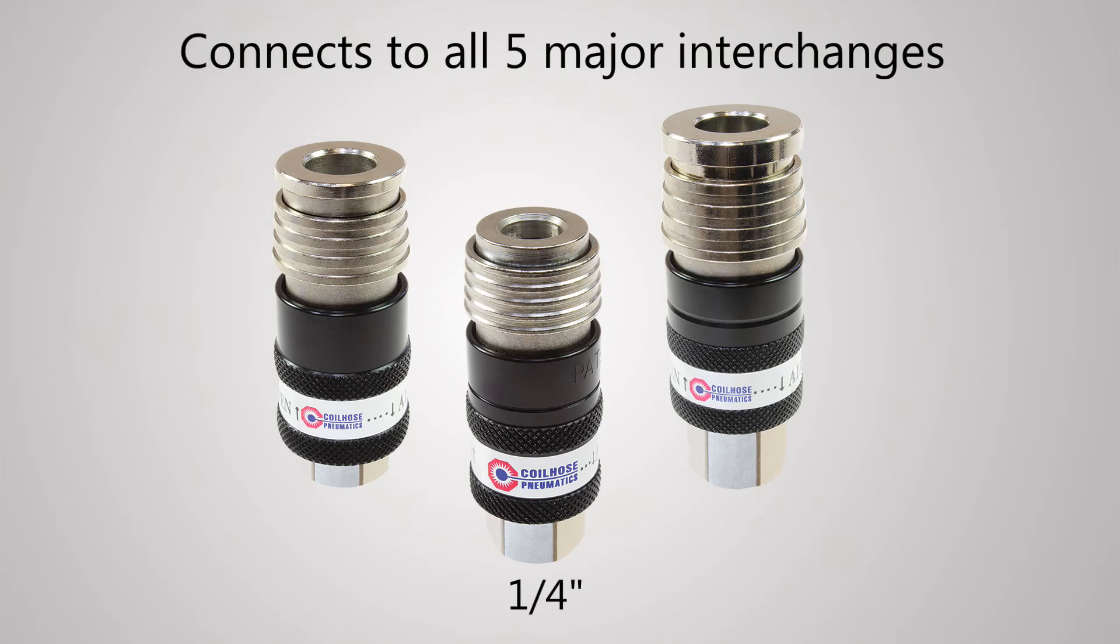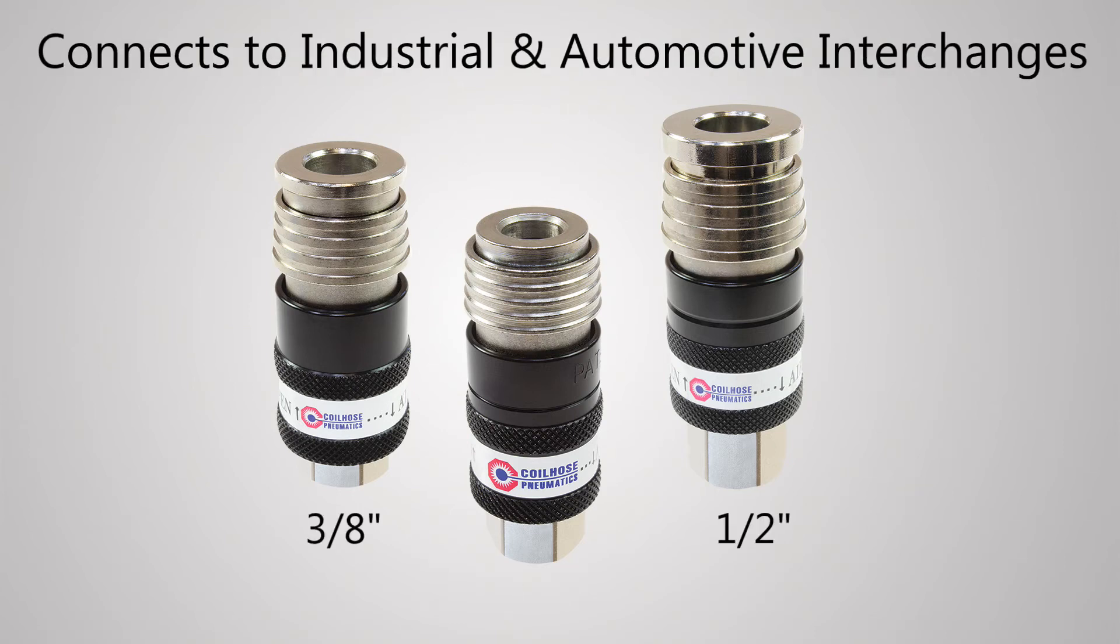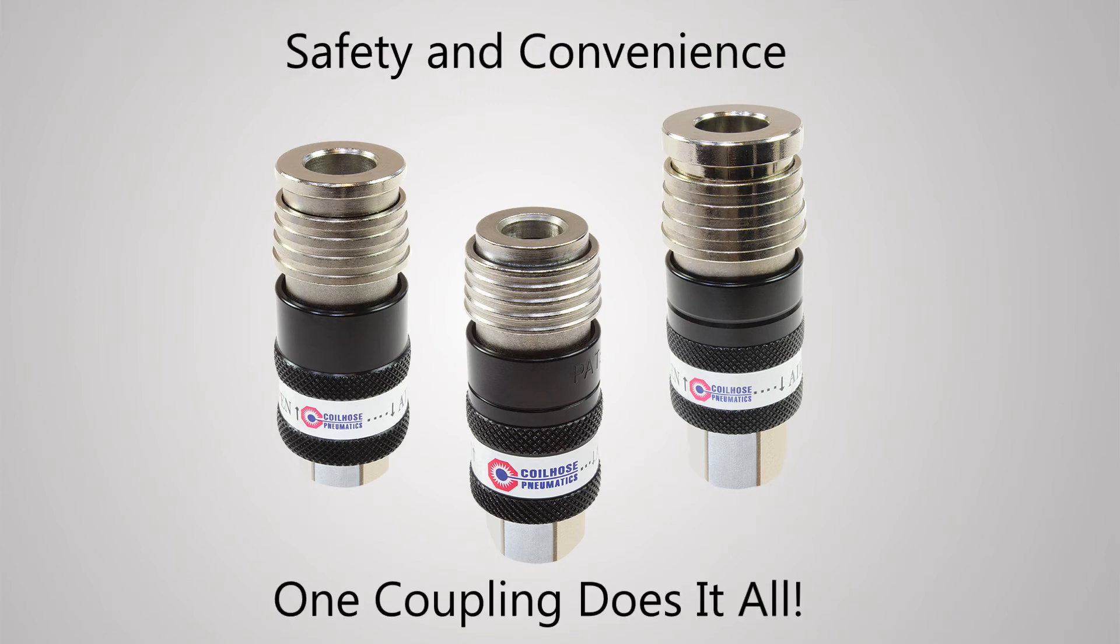While the quarter-inch coupler can be used with all five major interchanges, the three-eighth-inch and one-half-inch two-in-one safety exhaust couplers connect with the two most popular interchanges: Industrial and Automotive.